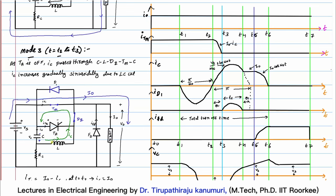When IC rises to equal I0, the current through main thyristor Tm becomes I0 minus IC equals zero. As IC exceeds I0, the thyristor would need to carry current in the reverse direction, which it cannot allow. So Tm is commutated — reverse biased and turned off. The path for current now shifts: diode D1 gets forward biased by the applied voltage and the circulating current passes through D1 instead. The freewheeling diode may also start conducting if needed to maintain load current at I0.